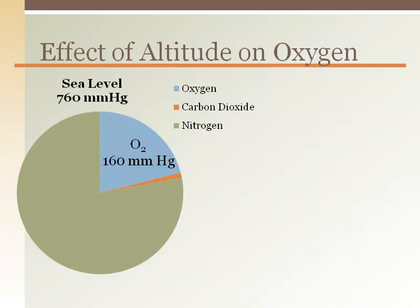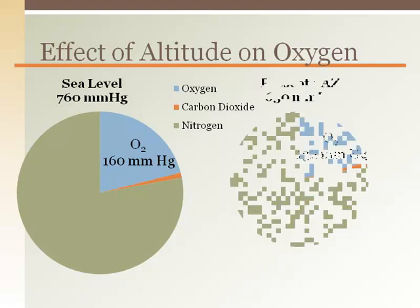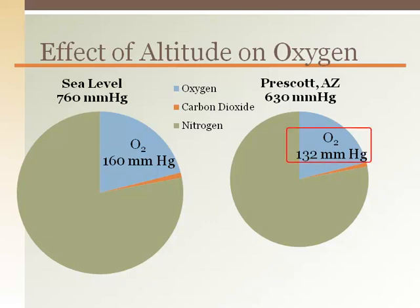Here we can visually see the composition of air as a pie chart at sea level. Oxygen is 21% of the air, which means the partial pressure of oxygen, or PO2, is 160 mmHg that you can breathe in. In Prescott, Arizona, the atmospheric pressure is no longer 760 but smaller — it's 630 mmHg — so the total amount of air available is less. Oxygen is still 21%, so the PO2 available to breathe in is only 132 mmHg.